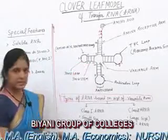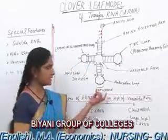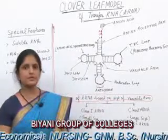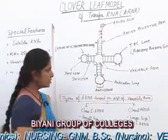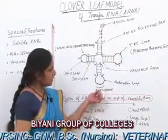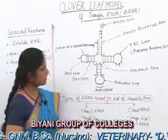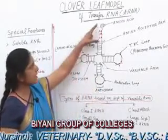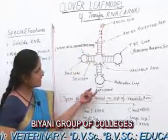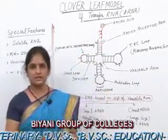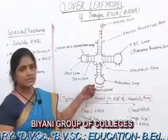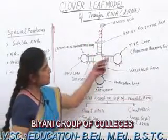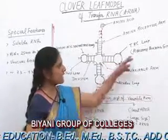The next arm is called the anticodon arm, whose main significant part is the anticodon sequence. This is the triplet sequence which is complementary to the codons present on messenger RNA. During protein synthesis, the messenger RNA codon makes pairing with the anticodons, and accordingly which amino acid is bound to the transfer RNA is decided by the sequence of anticodons. This sequence also represents the uniqueness of each transfer RNA.